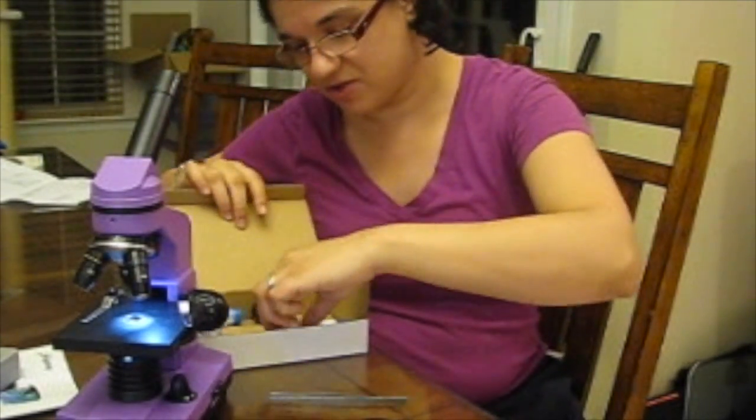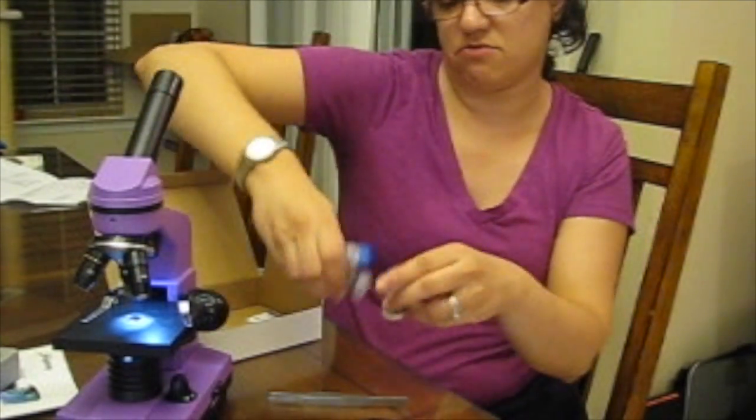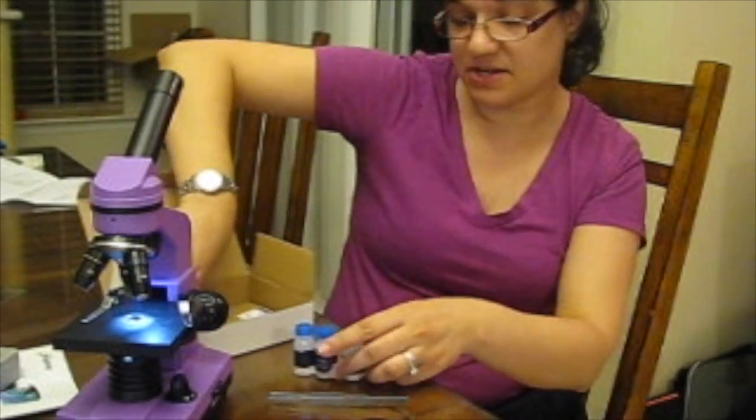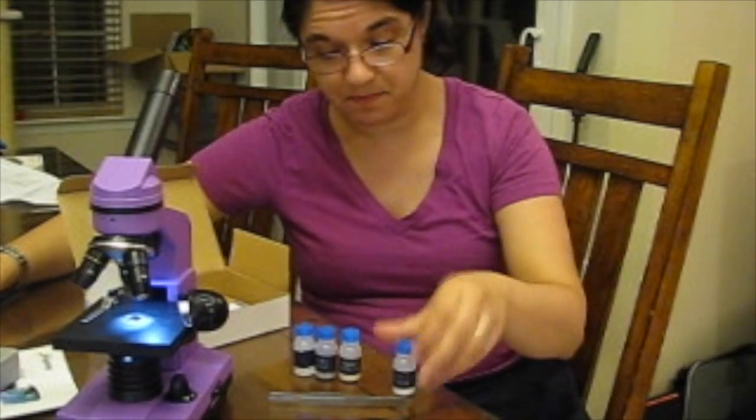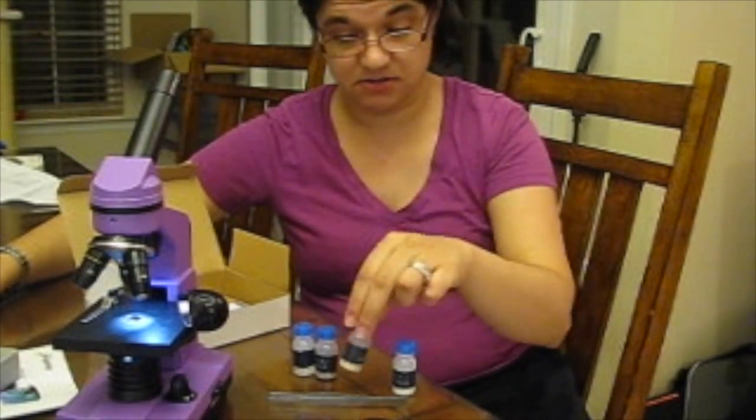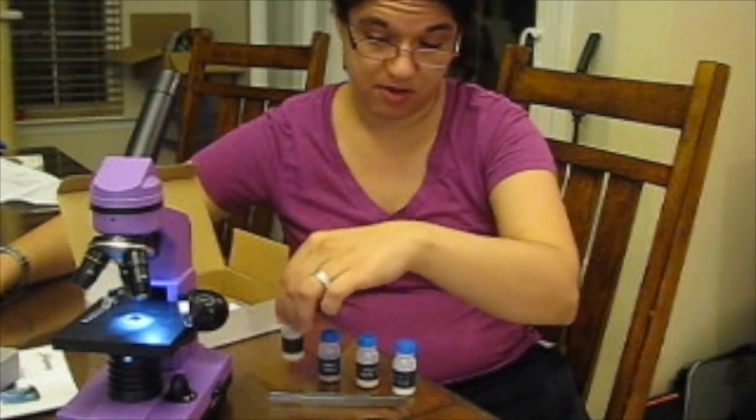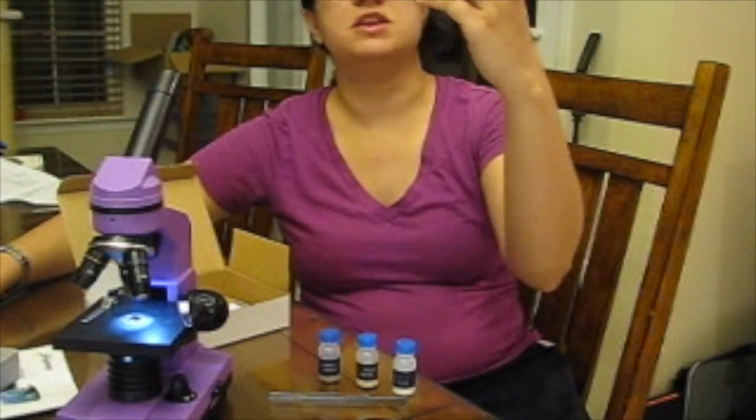And then the really cool part is it comes with four vials here of materials that are used in the experiments in the book. We have sea salt, yeast, brine shrimp, and gum media.